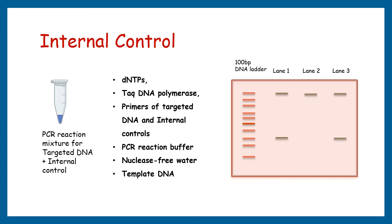The internal control, though independent, is more valuable than the native or external positive control. It is also known as an internal positive amplification control, and it usually requires a multiplexing reaction to amplify another region along with our target. As a result, we observe two amplicons — our target and the internal control. To set it up, another set of target primers is added to the reaction along with target-specific primers, Taq DNA polymerase, dNTPs, reaction buffer, and nuclease-free water.